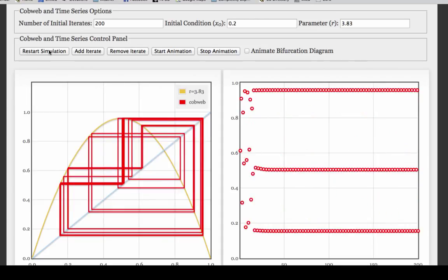So there's been another bifurcation between r equals 3.8 and r equals 3.83, from a chaotic orbit to a periodic orbit. So how can we capture all of that richness of behavior, the different attractors and the bifurcations between them, on one plot?